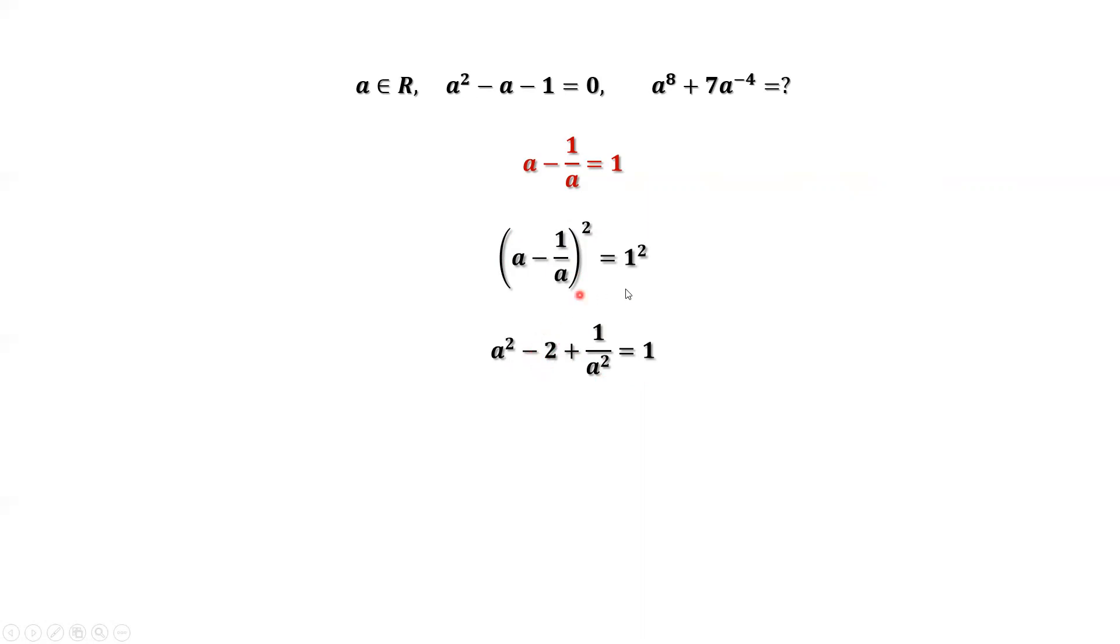Move negative 2 to the right-hand side. We have a squared plus one over a squared equals three.